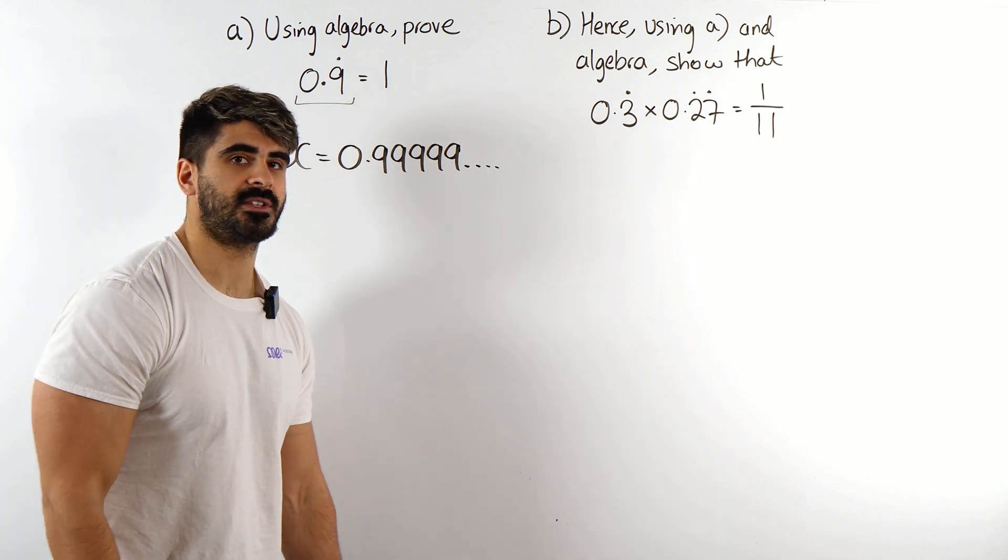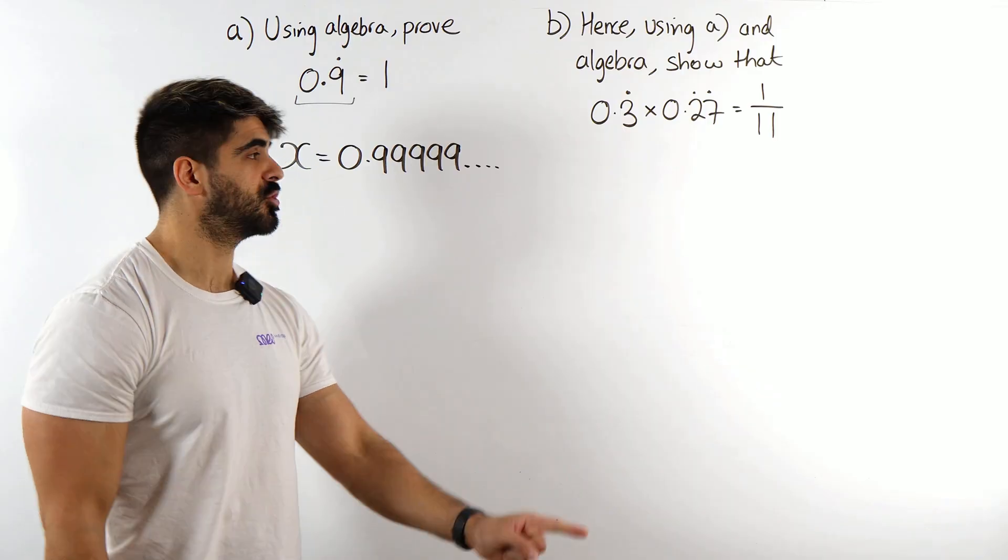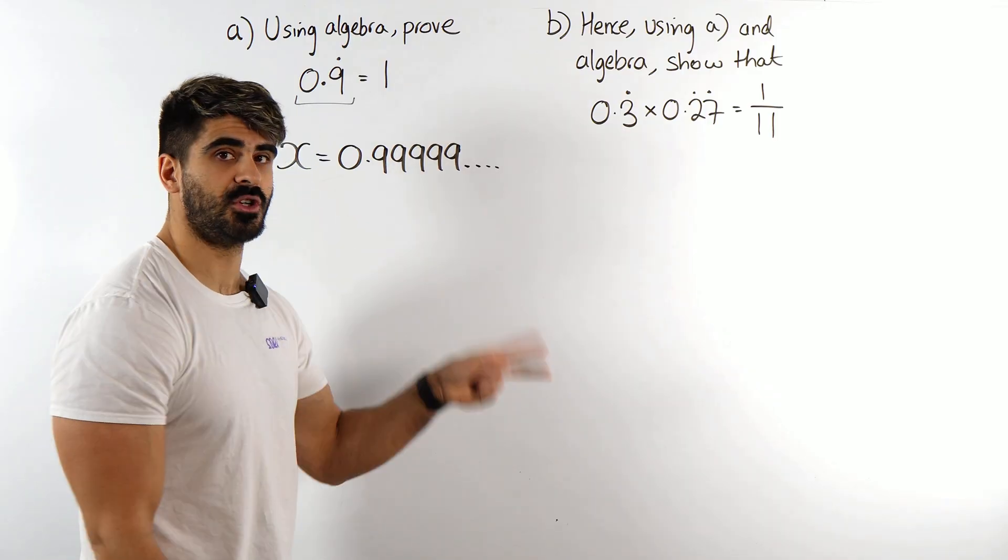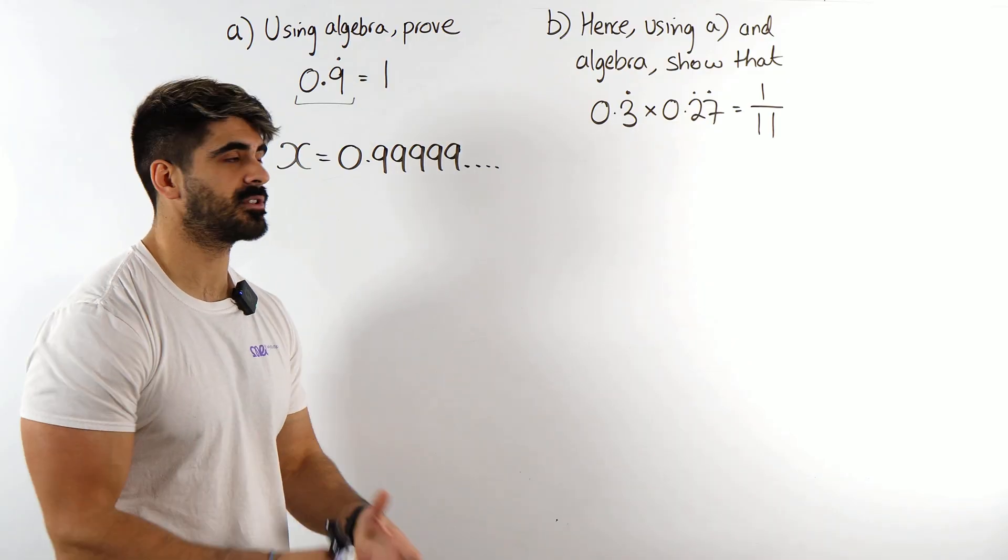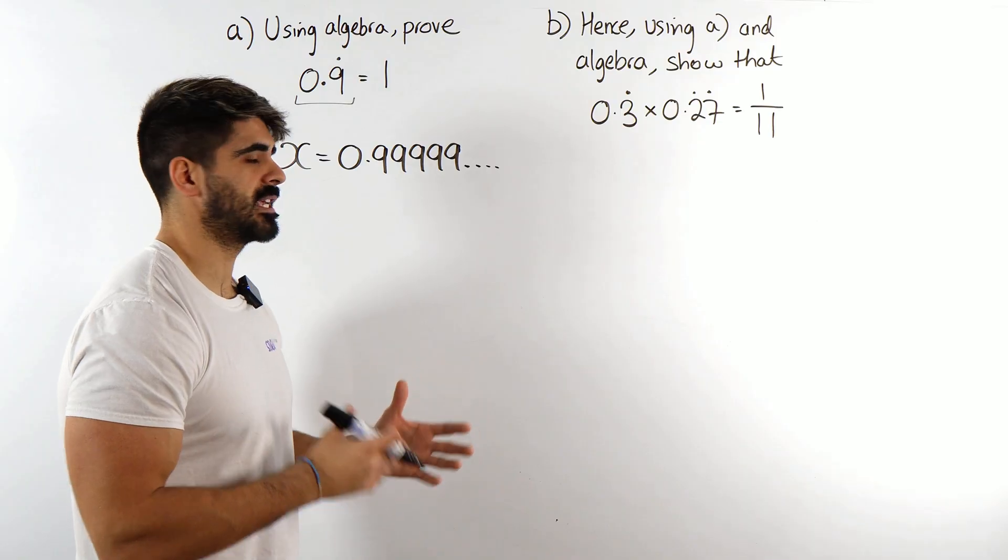Now all you guys need to remember is this, if one number is recurring you times this by 10, if there's two numbers recurring times by 100, three numbers recurring times by 1,000 etc. All it is is powers of 10.